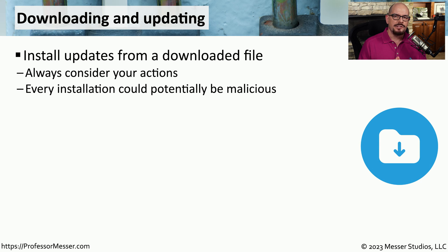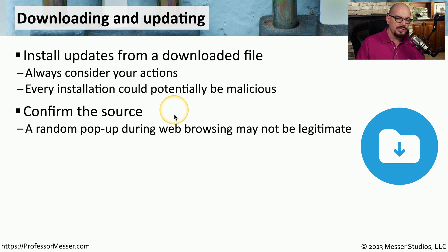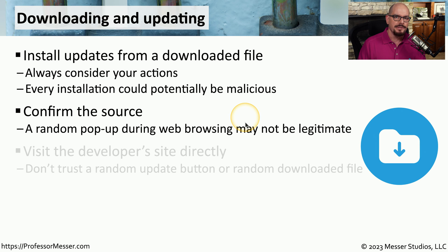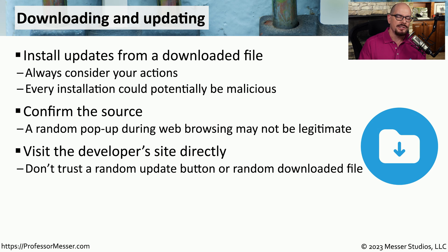We're very often installing these updates from a file that has been downloaded from a third-party website. So we need to look at where we're downloading this file from and understand what might happen if we perform this update. We should make sure that the source is trusted and that we're going to a site that commonly hosts these types of patches. If we're getting a random pop-up message during our normal web browsing session telling us to click here to update, this might not be a legitimate update message. If you want a relatively high amount of trust, you should download the update directly from the application developer's site.